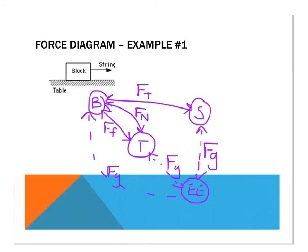We're going to be using the situations that we drew system schemas for in the previous video. The first thing that you need to do is decide which single object you're going to draw a force diagram for. You can draw a force diagram for any object — the table, the block, the string, even the entire earth. But in this case, we're going to focus on the block. We're going to use a dot or a square to represent that block in the force diagram — it doesn't matter which.